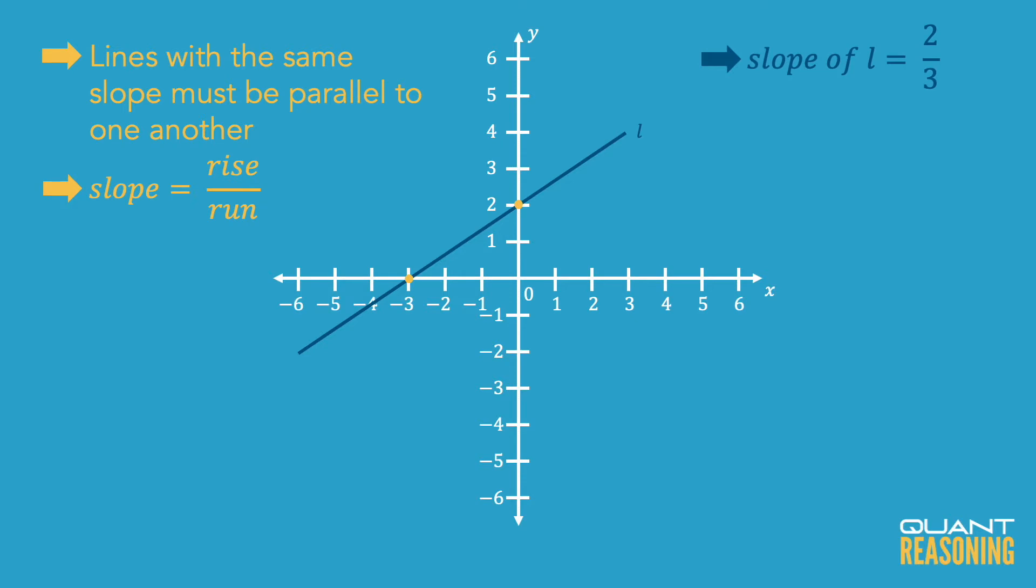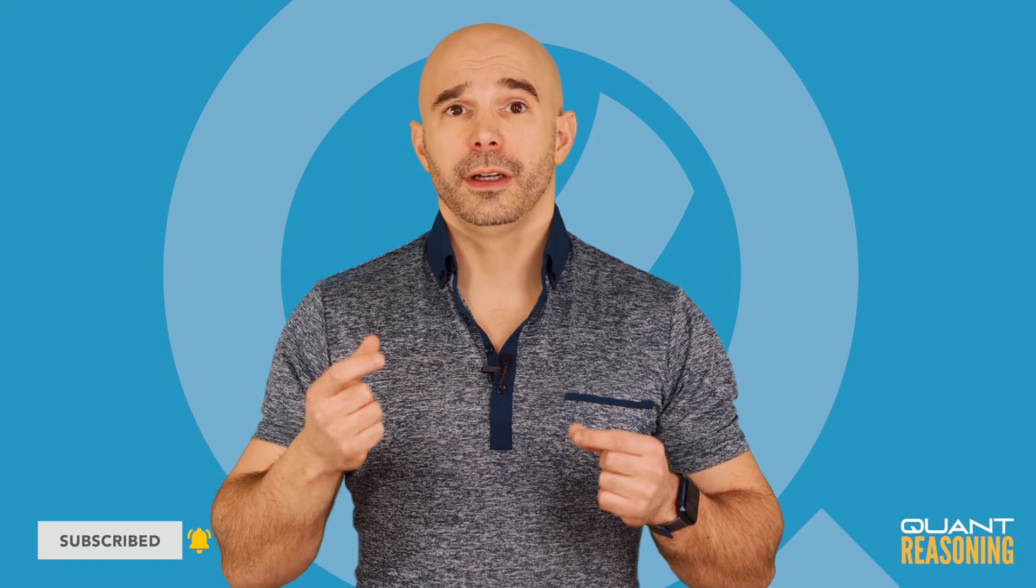So now we know the slope of this line is 2 thirds, and we know we're looking for a line that is parallel, meaning also has a slope of 2 thirds. Now in order to find the slope of a line, we have to isolate y and look at the coefficient of x.